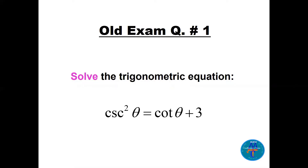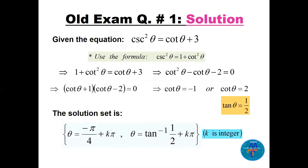...equals cotangent theta plus 3. Now let's try to make the whole equation the same function so that we can factor it easily. We use the formula: cosecant squared of theta equals 1 plus cotangent squared of theta. Replacing on the left side: 1 plus cotangent squared of theta equals cotangent theta plus 3. Bring everything to one side and we have cotangent squared of theta minus cotangent theta minus 2 equals zero. We can factor this.